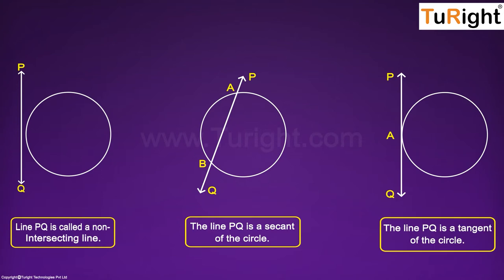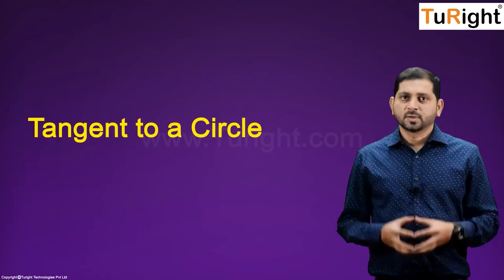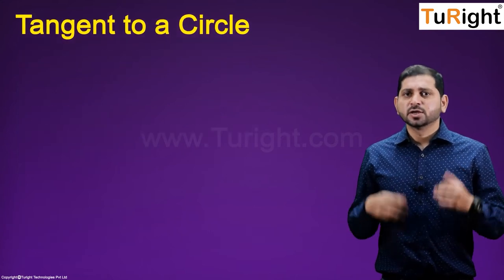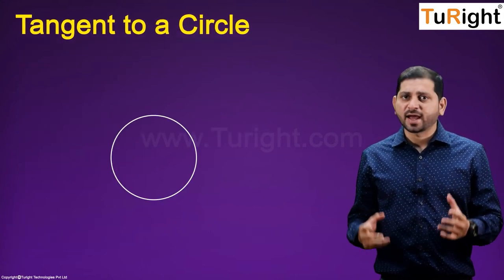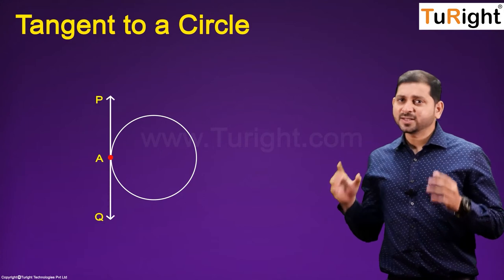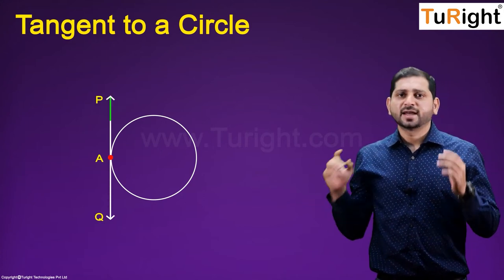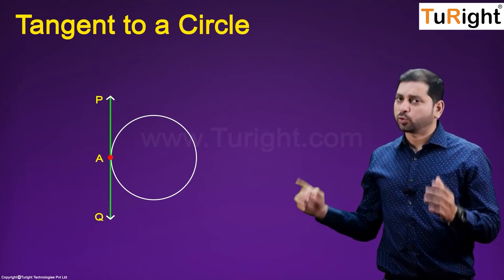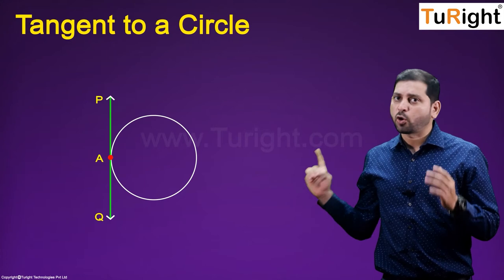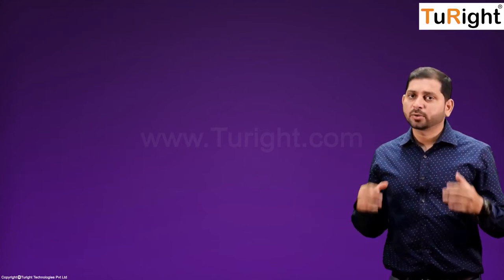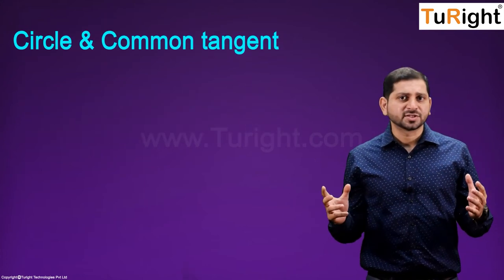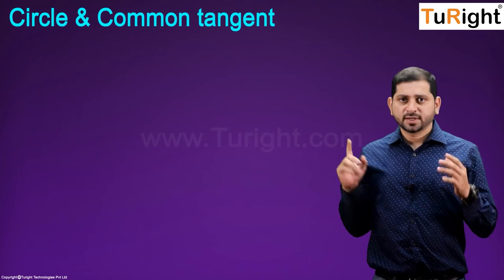In diagram 3, the line PQ is a tangent to the circle. A tangent to a circle is a line that intersects the circle at only one point. Now let's learn about two circles and their common tangents.